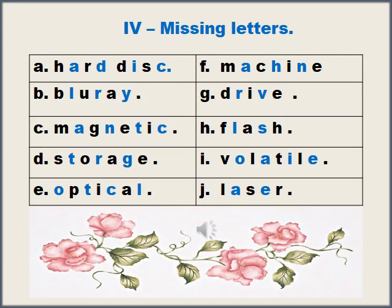Now move on to Exercise 4 on page number 16. Read the words carefully, fill the missing letters properly and make the word correctly. A: Hard disc — missing letters are A, D, I, C. B: Blu-ray — missing letters are L, R, Y. C: Magnetic — missing letters are A, N, T, C. D: Storage — missing letters are H, T, R, G, E. E: Optical — missing letters are O, T, C, L.